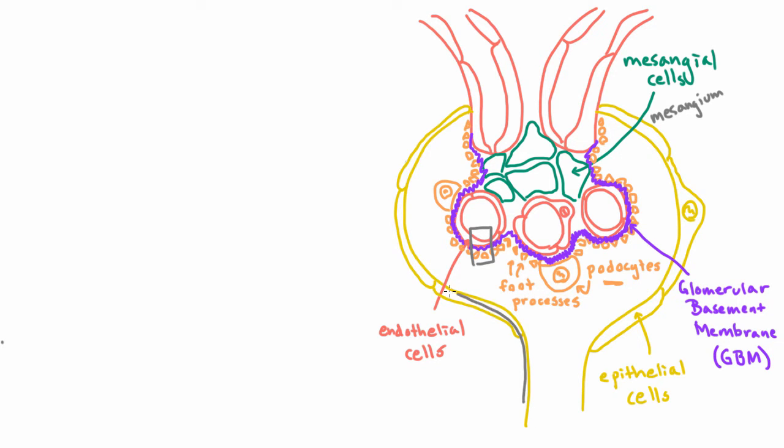You might notice that if you trace along here, along the epithelial cells of Bowman's space, you can actually continue along to the podocytes and then get back to these epithelial cells over here. So all these things are continuous with each other.